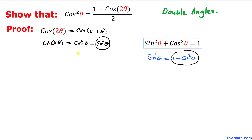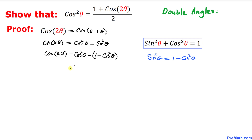Therefore we replace sine squared theta with one minus cosine squared theta. So cosine of 2 theta equals cosine squared theta minus the quantity one minus cosine squared theta. Now let's open up the parentheses and distribute the signs: that gives us cosine squared theta minus one plus cosine squared theta.